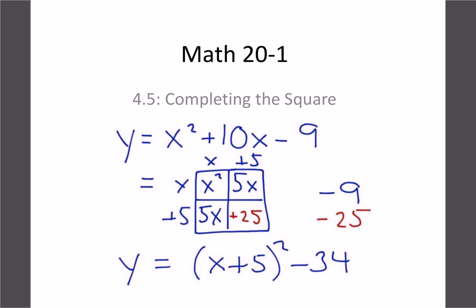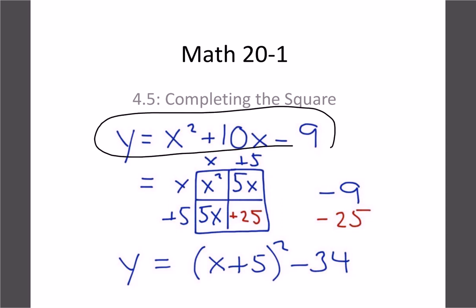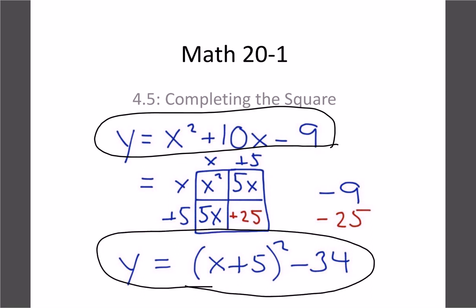We're going to do a new lesson today on converting from a standard form equation to a vertex form equation. The method we're going to learn is called completing the square — it's a little bit tricky, but once you get the hang of it, you'll see it's not too bad. For example, we're going to switch y = x squared plus 10x minus 9 to vertex form: x plus 5 squared minus 34.